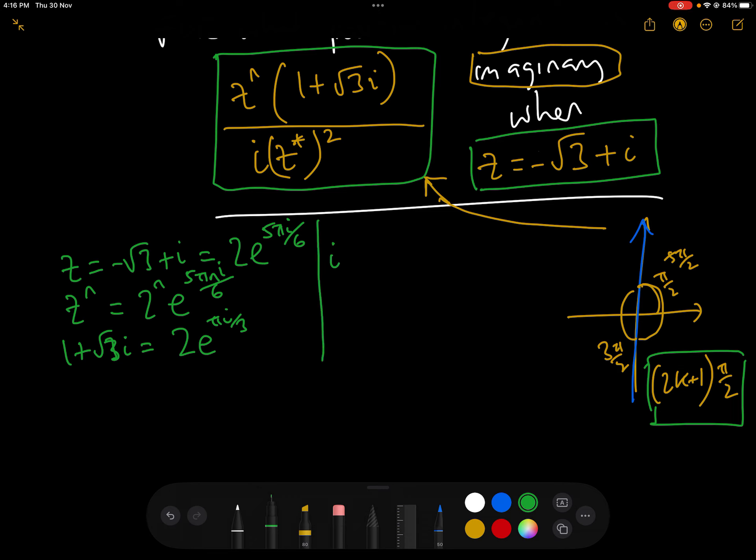And then we've got i, of course. Let's just draw a line here. i is the well-known e to the i pi over 2. And we have the last one, z conjugate. If z is 2e to the 5 pi i over 6, then z conjugate is 2e to the minus 5 pi i over 6. So z conjugate squared is 4e to the minus 10 pi i over 6.